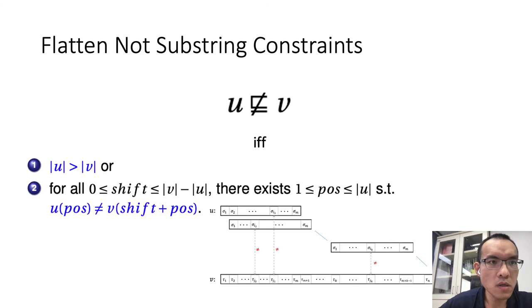In this work, we extend the flattening approach to support not-substring constraints. We use the idea that u is not a substring of v if and only if one of the two conditions hold. First, u is longer than v and hence is not a substring. The other is that in case u is shorter, then for all possible shifts of u inside v, there exists a dismatched position. If for all possible shifts we find a dismatch, then u is not a substring of v also holds.